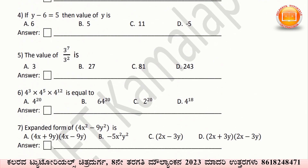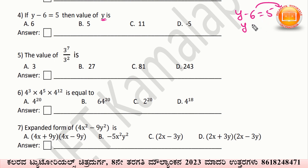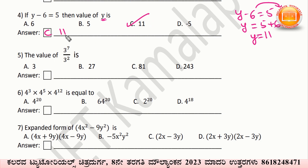Here, if y minus 6 is equal to 5, we have to find the value of y. We transfer the 6 to the right-hand side: y minus 6 equals 5, so y equals 5 plus 6. That is y equal to 11. Option C — 11 — is the correct answer. The value of y is 11.